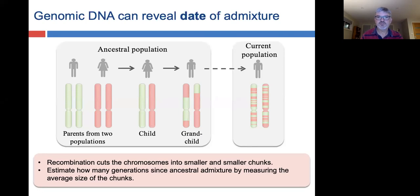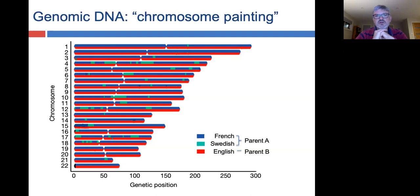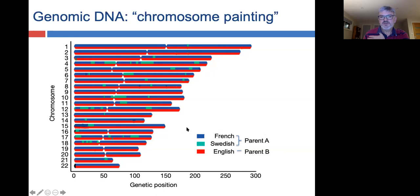This is what genomic data looks like when you look at the chromosomes of an individual — a process called chromosome painting, used to determine the ancestry of chromosomes in one person. This data is from a person who had an English parent, which is why every single one of their 22 chromosomes is visible. One chromosome is entirely red — it came from one parent — but the other chromosome came from a parent who had a little bit of Swedish ancestry. The average length of these chunks tells us roughly how long ago that Swedish ancestry entered into this family.